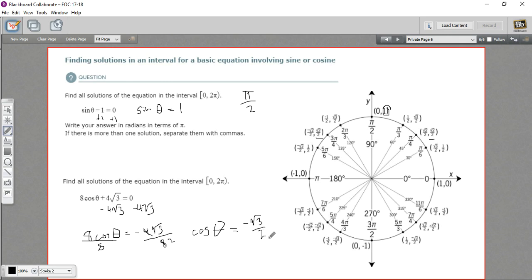And that value should look pretty familiar to you. You've seen that value on the unit circle before. So let's look for values where cosine—remember, cosine is the x, so it's going to be over on this side.